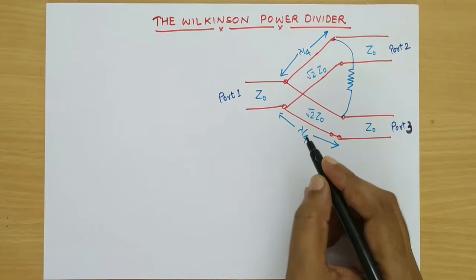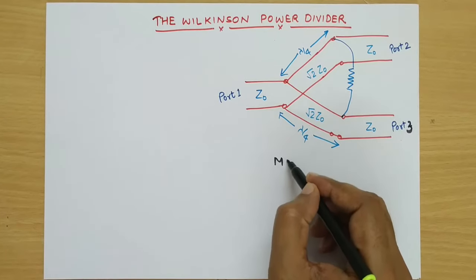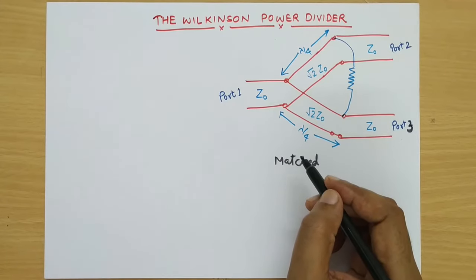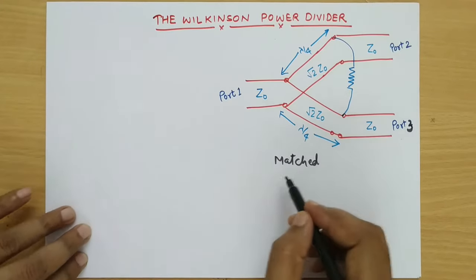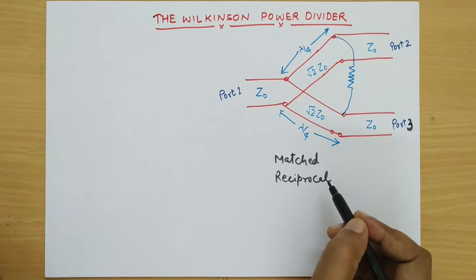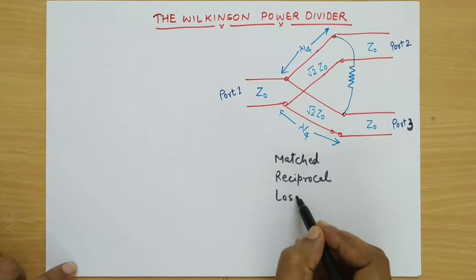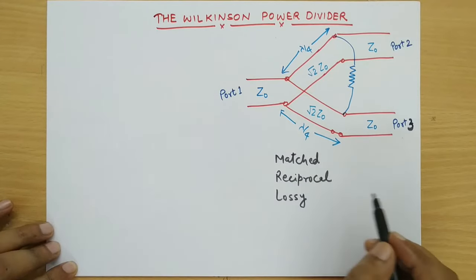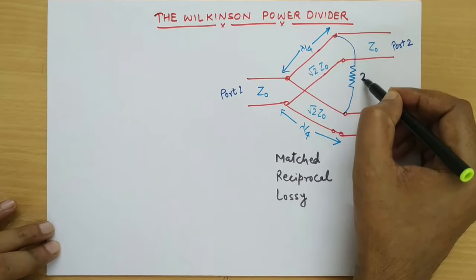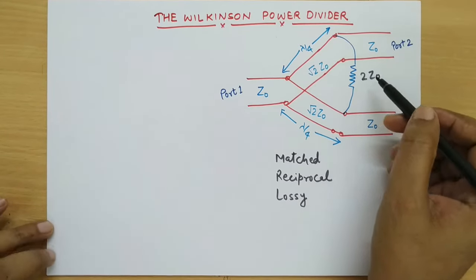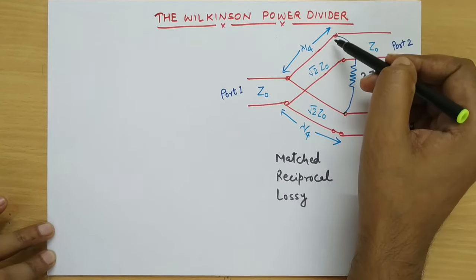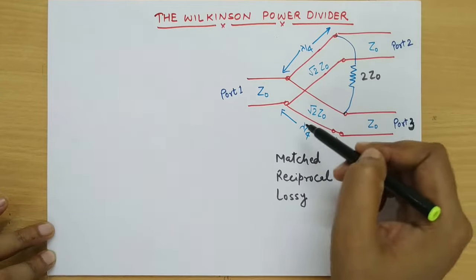The Wilkinson power divider is matched at all its ports, is reciprocal and lossy. That means it is not lossless because there is a resistance having value 2Z0 connected between port 2 and port 3 at the lambda by 4 section.